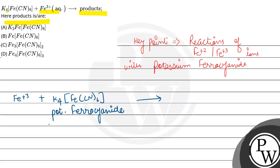This reaction gives the product Fe4 FeCN6 whole thrice.